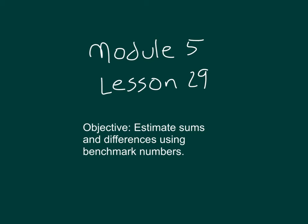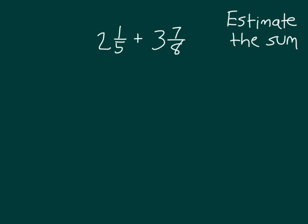The objective is to estimate sums and differences using benchmark numbers. Let's estimate the sum of 2 and 1 fifth plus 3 and 7 eighths.